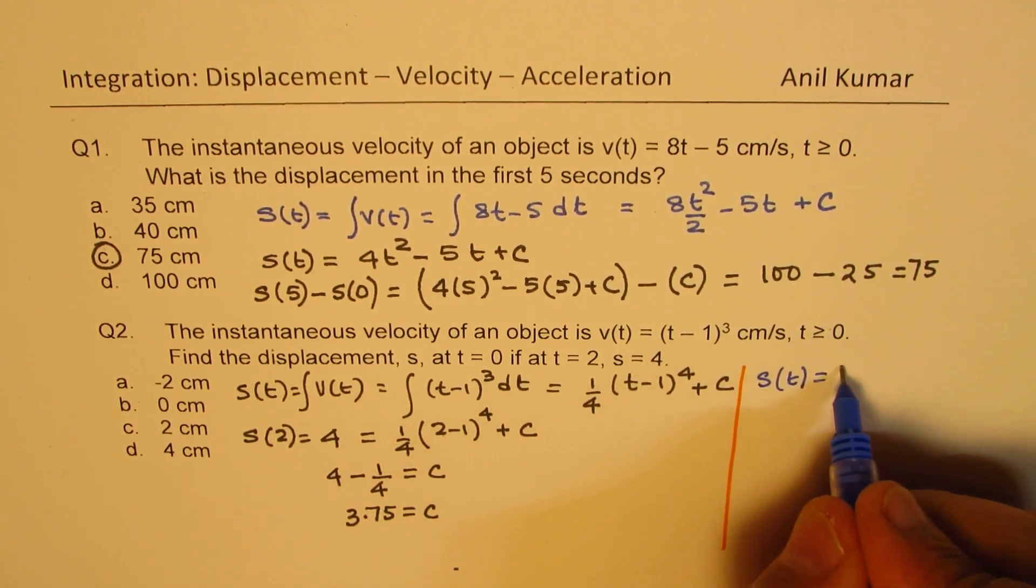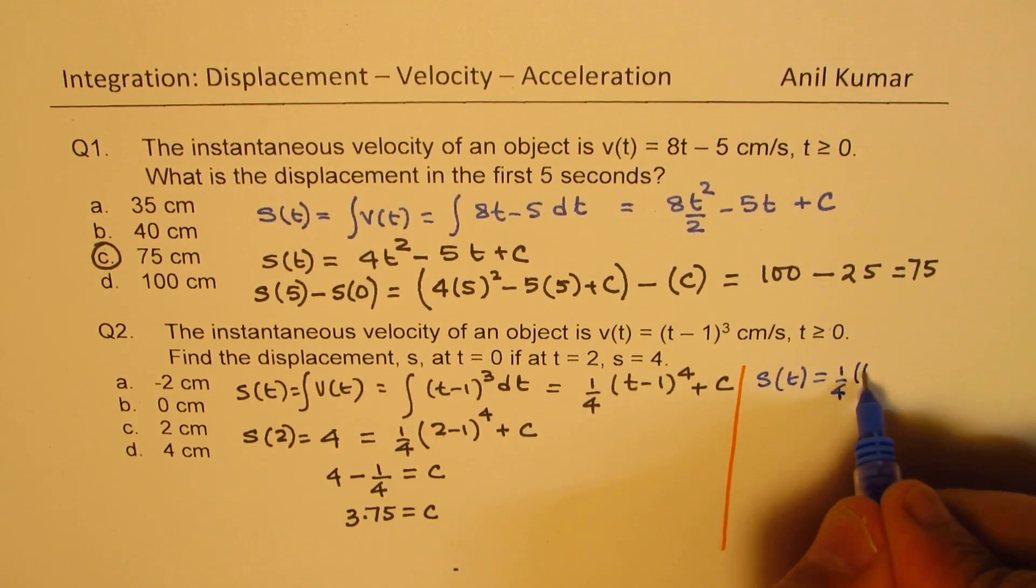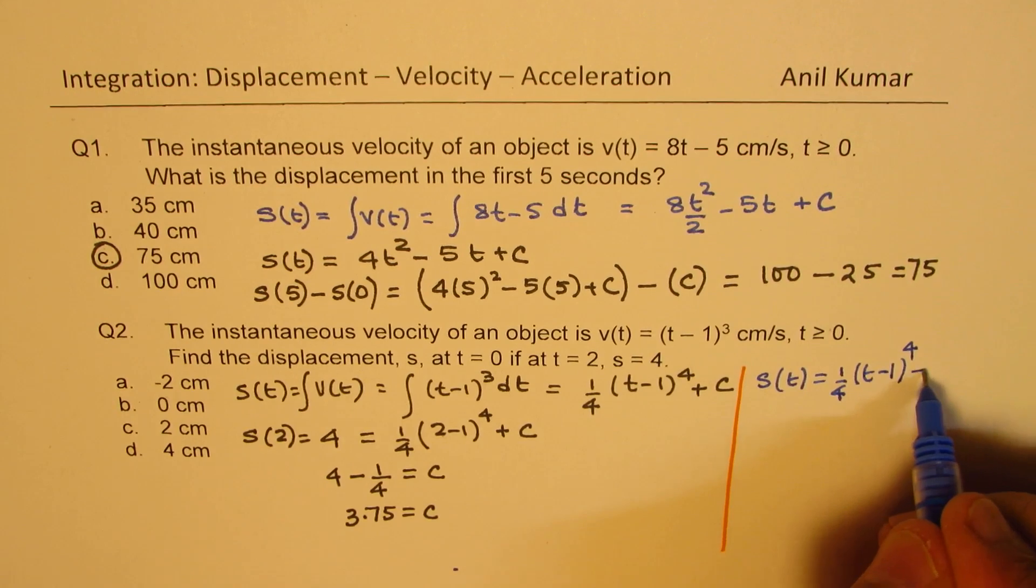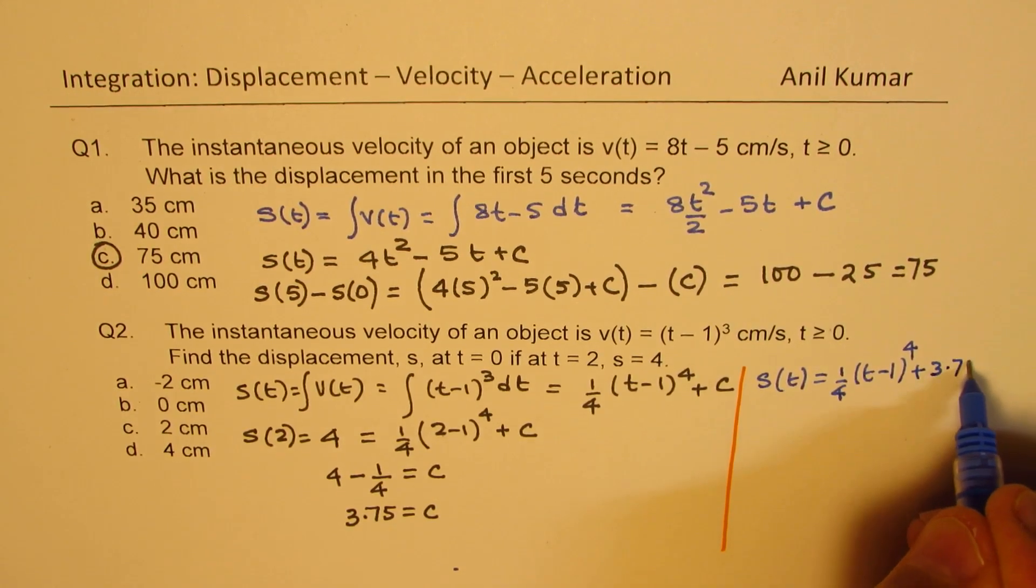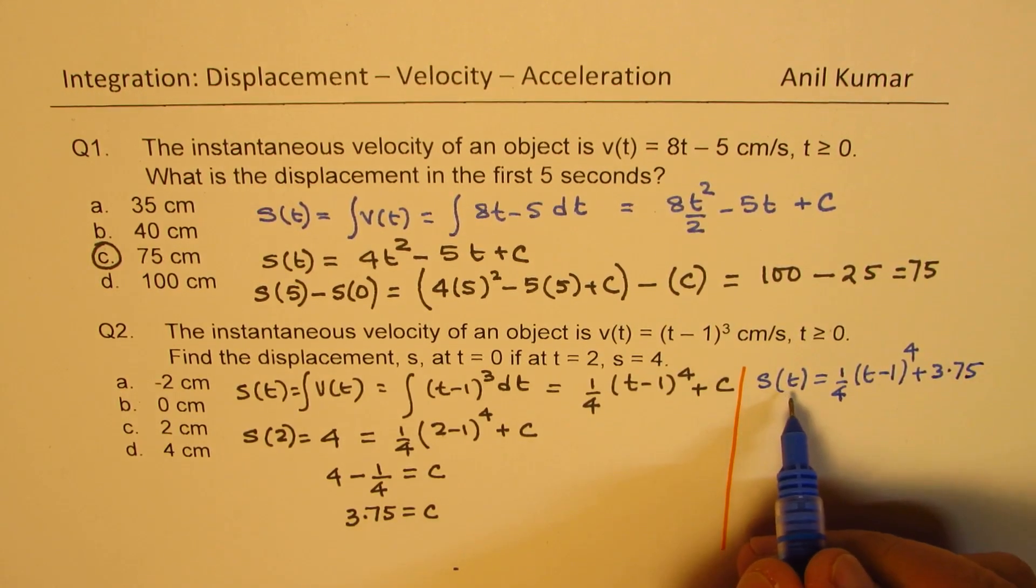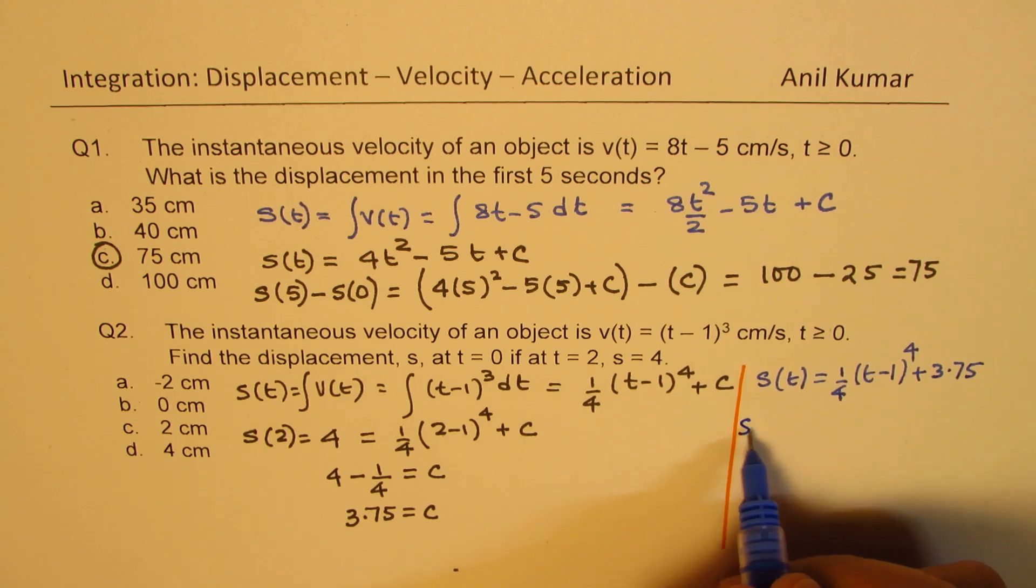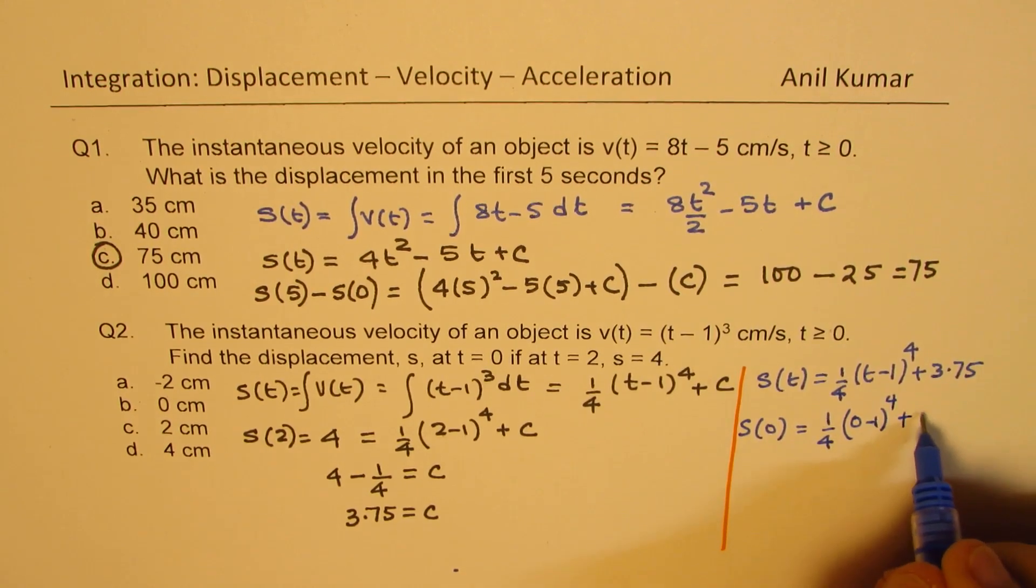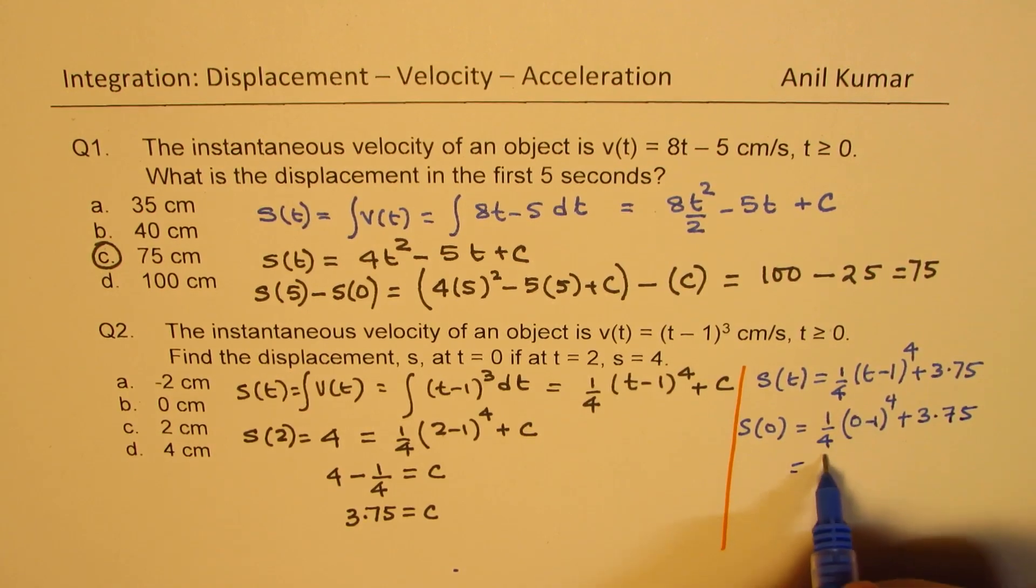So c is for us 3.75. So we can say s(t) is now equal to this expression: 1 over 4, (t minus 1) to the power of 4 plus 3.75. So if I substitute 0 here, I get 1 fourth of (0 minus 1) to the power of 4 plus 3.75. So that is 1 fourth, this is 1, which is 0.25.